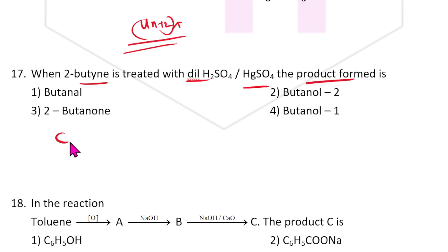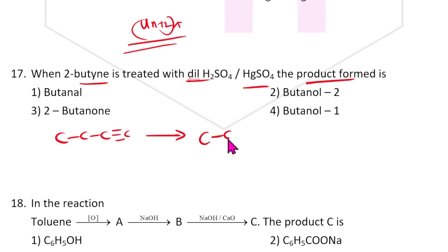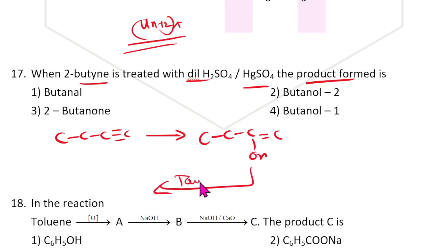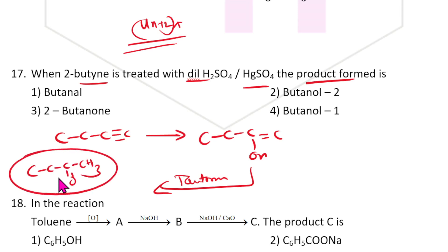When 2-butyne is treated with dilute H2SO4, first it forms an enol (OH double bond C), then tautomerism occurs — giving C=O with CH3. Butanone (2-butanone) is the product. Answer is 2-butanone.